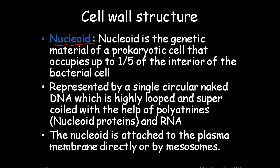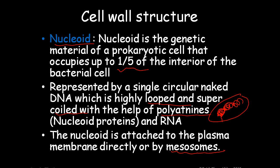Nucleoid is the genetic material of the prokaryotic cell that occupies around one-fifth of the interior of the bacterial cell. It is a highly coiled structure represented by a single circular naked DNA which is highly looped and super-coiled, with the help of nuclear proteins and RNA. If you look at the bacterial cell, this super-coiled nucleoid structure is connected to the plasma membrane either directly or with the help of mesosomes.